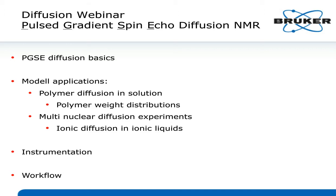I want to start with some basics. Then we have these model applications: polymer diffusion in solutions, where we look at polymer weight distributions. The second one is multi-nuclear diffusion experiments, where we have an example of ionic diffusion in ionic liquids. At the end, I want to come briefly to instrumentation and describe the workflow of how such a measurement will go.